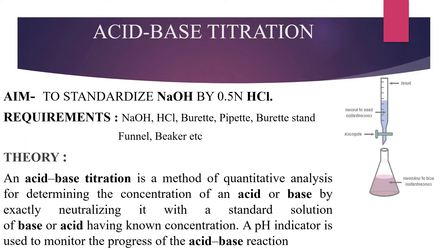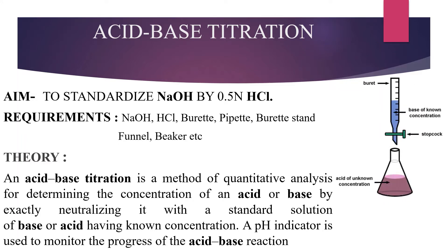Two pieces of equipment are majorly used: first is the burette and second is the conical flask. In the conical flask, we take the unknown concentration solution, and in the burette, we take the known concentration solution. That means the primary standard is taken in the burette and the secondary standard is taken in the conical flask.